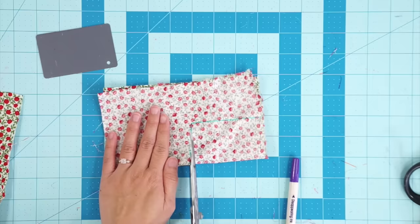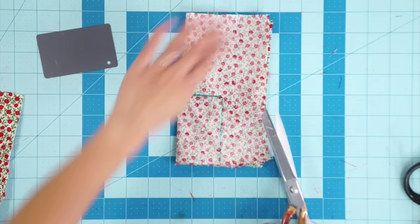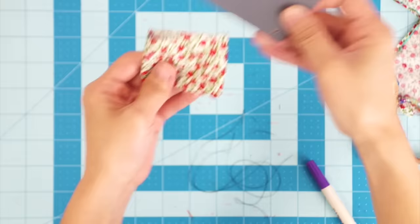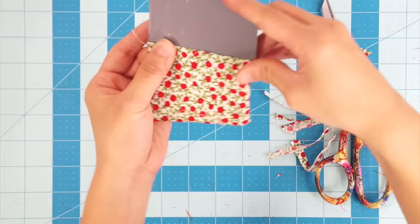When sewing any project you also need to include seam allowance. For example if I wanted to make a casing for this card and I just simply trace the size of the card and cut out my fabric without adding seam allowance. After I sew it the card won't be able to fit inside because it's a lot smaller now. I normally add a half inch seam allowance to all my projects.